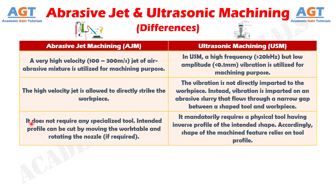Number 3: Abrasive jet machining does not require any specialized tool. The intended profile can be cut by moving the worktable and rotating the nozzle if required. Whereas, ultrasonic machining mandatorily requires a physical tool having the inverse profile of the intended shape, and accordingly, the shape of the machined feature relies on the tool profile.